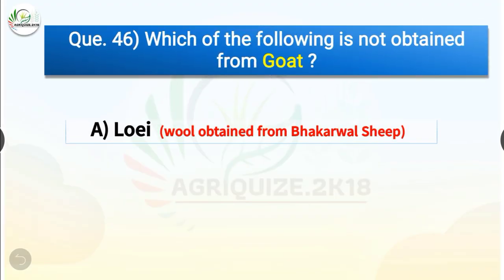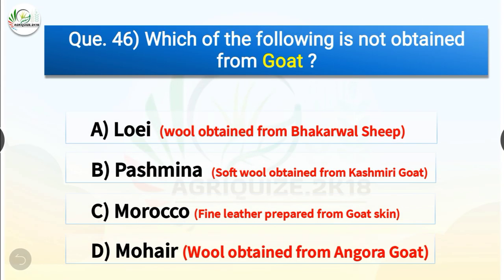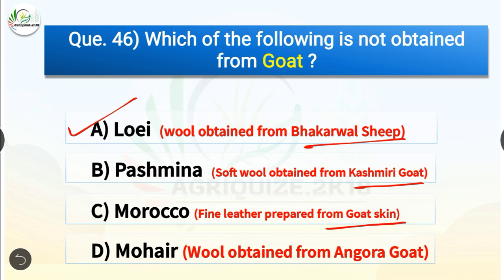Question number 46. Which of the following is not obtained from goat? The options are Loi, Pashmina, Morokko or Mohair. The correct answer is option A, Loi. So Loi is not obtained from goat — it is the wool obtained from Bhakarwal sheep. Pashmina is the soft wool obtained from Kashmiri goat. Morokko is the fine leather prepared from goat skin. Mohair is the wool obtained from Angora goat.